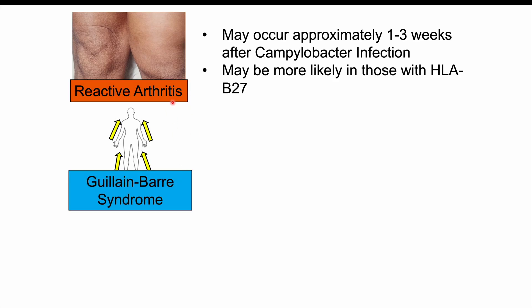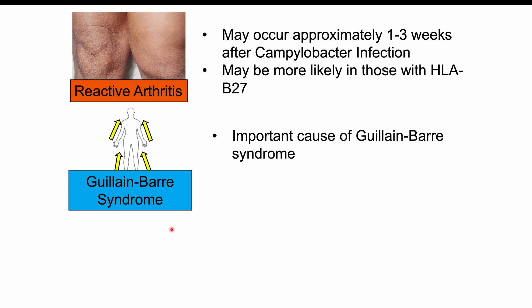There is also a connection with Guillain-Barré syndrome. Campylobacter infections are actually an important cause of Guillain-Barré syndrome, which is an ascending paralysis starting with the lower limbs and working its way up. In some cases, if it reaches the diaphragm, it can lead to life-threatening complications. For more information on Guillain-Barré syndrome, please check the lesson on that topic.